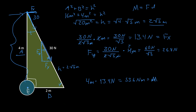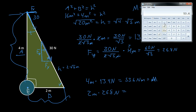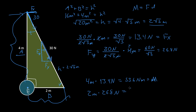Now let's verify using the y component at the bottom point. The distance is 2 meters, and the force in the y direction is 26.8 Newtons. So 26.8 times 2 equals 53.6 Newton-meters — and that again is equal to the moment. Both approaches give the same result.